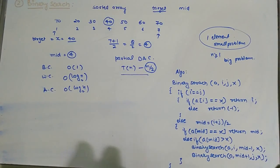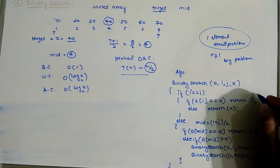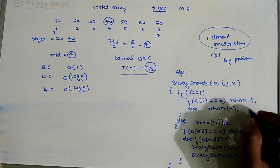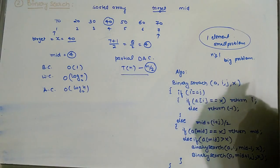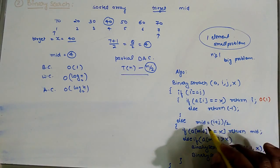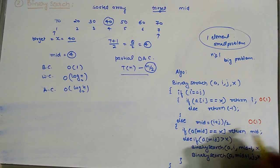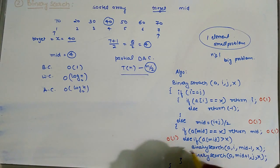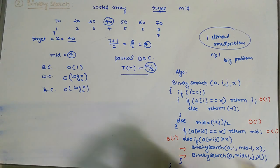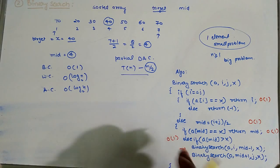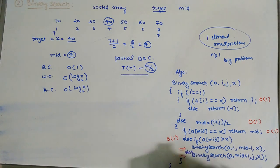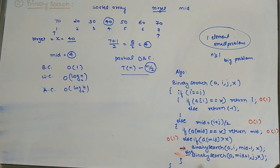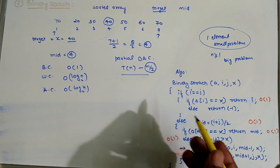The base case step requires O(1) time since we only check whether one element equals the target. The mid calculation also requires O(1) time. The comparison with x is also O(1). The recursive calls — either left or right — at any one time only one recursive call is executed due to the else statement, so either this recursive call or the other will be made.